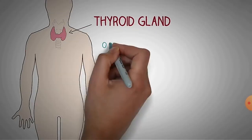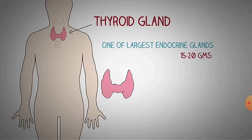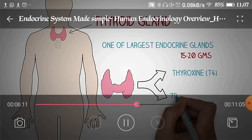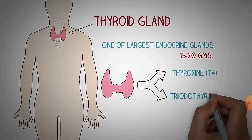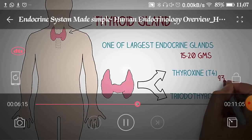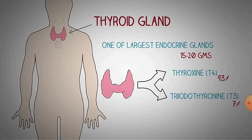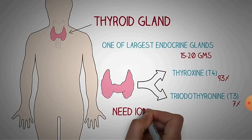The thyroid gland is one of the largest endocrine glands, weighing about 15 to 20 grams, with a butterfly-like shape. It releases two types of hormones: T4, called thyroxine (also called tetraiodothyronine), and T3, called triiodothyronine. Thyroxine is available at 93% while triiodothyronine is available at 7%. Their storage, release, function, and conversion — including the coupling process and iodine trapping process — have been discussed.